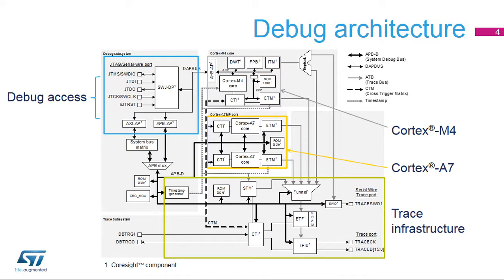Cortex-A7 Core includes the processor, single or dual core, and embedded trace module (ETM). Cortex-M4 Core includes the processor and associated debug and trace units: DWT, FPB, ITM, and ETM. In addition, there are system debug features including cross-trigger interfaces and matrix (CTI and CTM), which allow simultaneous halting of both cores, triggering of trace, etc. Global Timestamp Generator provides a common time reference for the different trace sources. DBG-MCU provides proprietary features such as freezing of timers during debug. External trigger input and output allows an external signal to trigger debug or trace, or generates a trigger pulse for synchronizing external equipment or components.